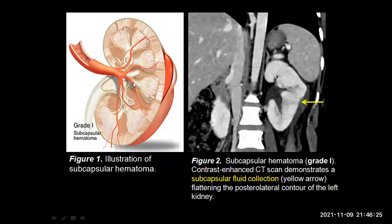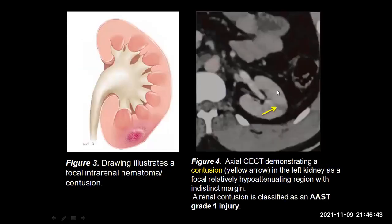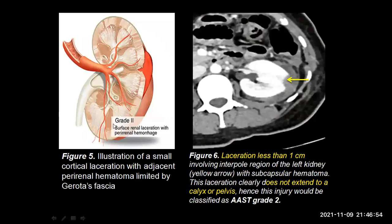These are a few reference cases. The first image is a coronal CECT image. You can see that a grade 1 injury includes either a subcapsular hematoma or a renal contusion. In this image, you can see there is subcapsular fluid collection that is flattening the posterolateral contour of the left kidney. This is again a grade 1 injury wherein you can see that there is a hypo-enhancing area in the interpole of the left kidney — this was a renal contusion. This case was a grade 2 injury; grade 2 injuries include renal lacerations that are small, that is less than 1 cm, and which do not extend into the collecting system. You can see that in the interpole region there is a small laceration and an associated subcapsular hematoma, and this laceration is not extending into the calyceal system.